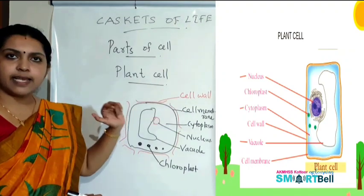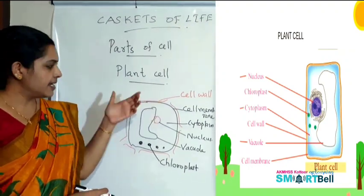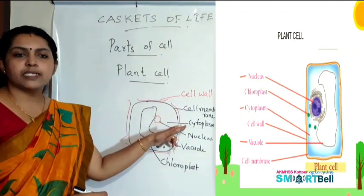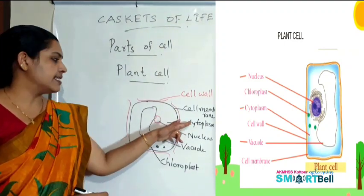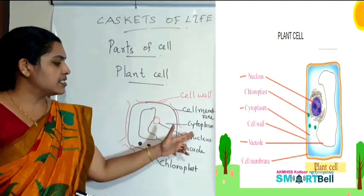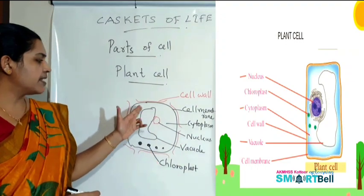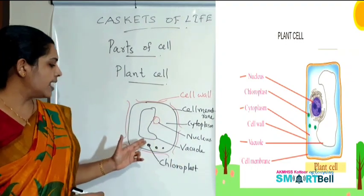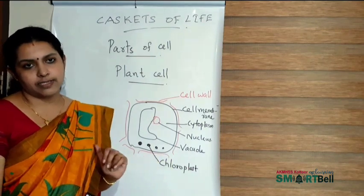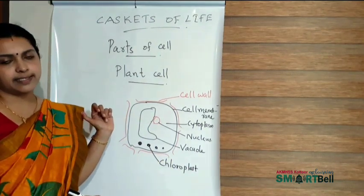So the important parts of the plant cell are: the outer covering — the cell wall — which is the protective layer; inside that, the cell membrane; then the cytoplasm filling the cell; the nucleus at the center; a large vacuole; and chloroplasts.